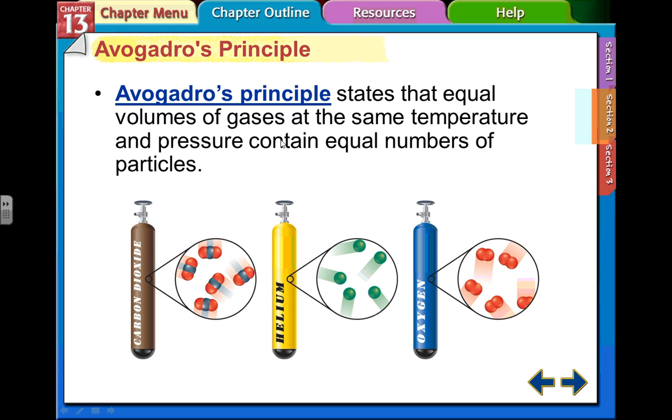Remember, Avogadro is our guy with the mole stuff. And this is the same kind of thing. A mole is an amount of things we have. So we're going to apply that same principle to gases now.